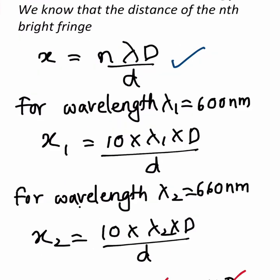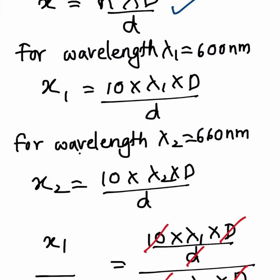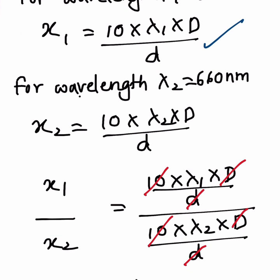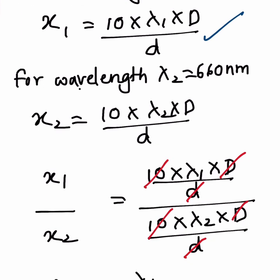For wavelength λ₁ = 600 nanometers, x₁ = 10 × λ₁ × D / d. Then for the second wavelength λ₂, we can write x₂ = 10 × λ₂ × D / d.